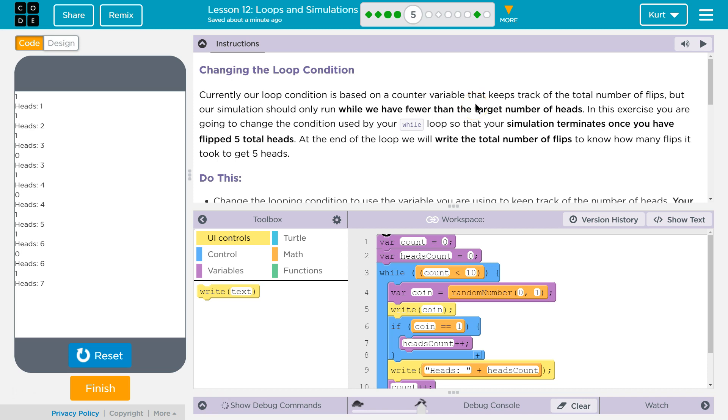In this exercise, we are going to change the condition used by your while loop so that the simulation terminates once you have flipped 5 total heads. So this is going to need to use the negation operator.